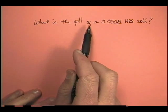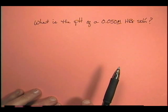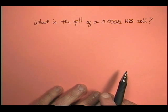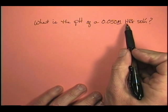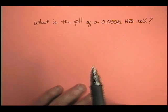Alright, what is the pH of a 0.050 molar HBr solution? Well, first thing you ask yourself, is this an acid or a base? Well, if you look here, how do we identify an acid? Oh, it's got the H out front, HBr. So we know this is an acid.